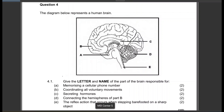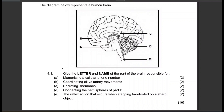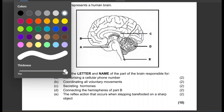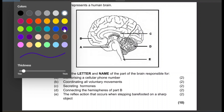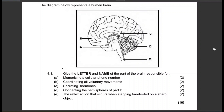The diagram below represents a human brain — easy stuff. Give the letter and name of the part of the brain responsible for memorizing a cell phone number. Remember they are asking us for both the letter and the name. Memorizing a cellular phone number — that will be the cerebrum, so letter B. One mark for the letter, one mark for the name.